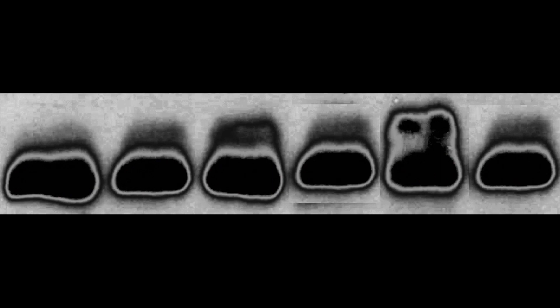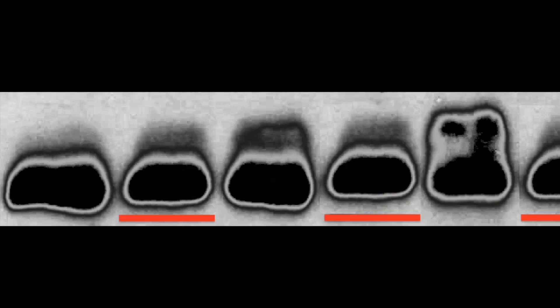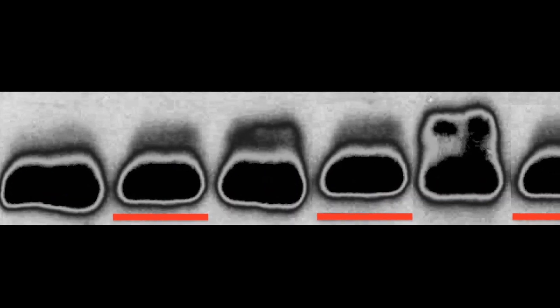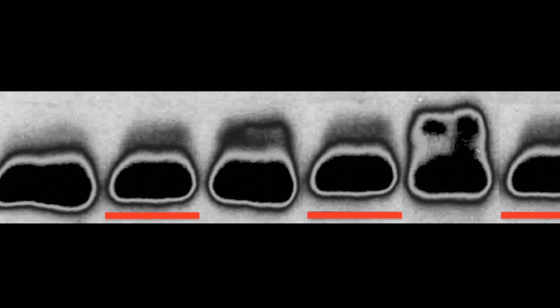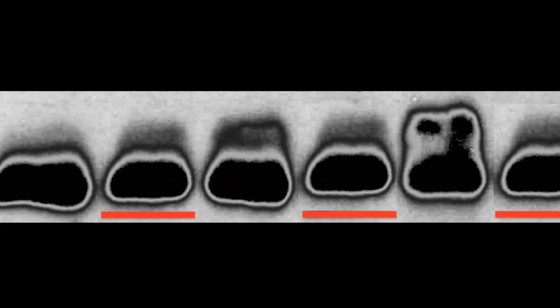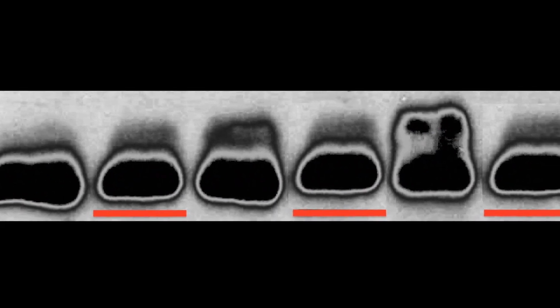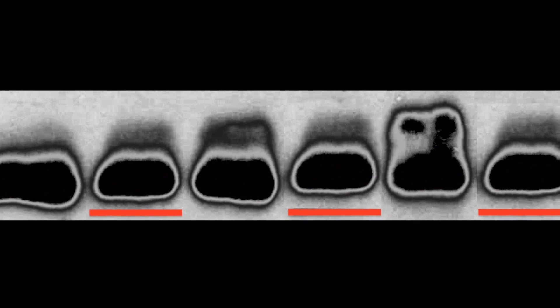Sometimes added sections are actual copies from elsewhere in the same blot or the same figure. In this image, the cuts themselves are only vaguely detectable. However, the same section seems to have been used three times, so it appears that this is not an original blot but an altered version.